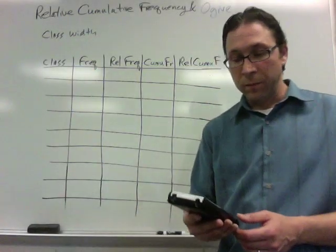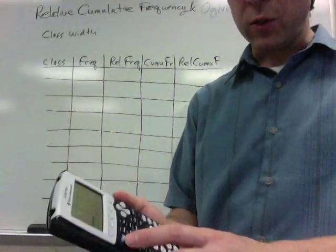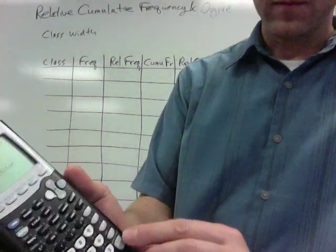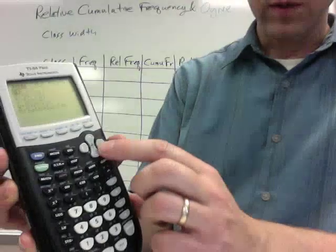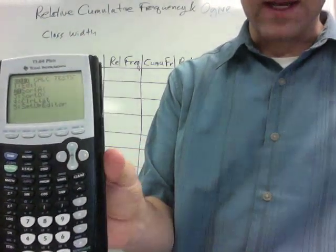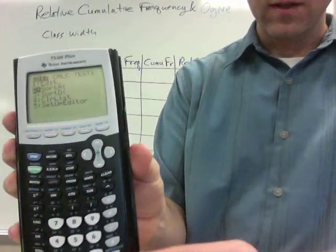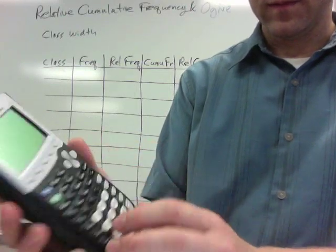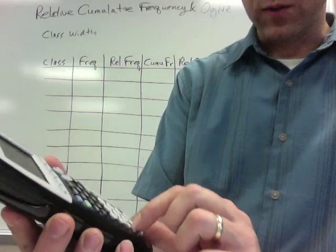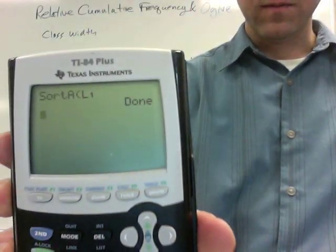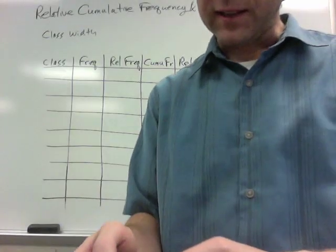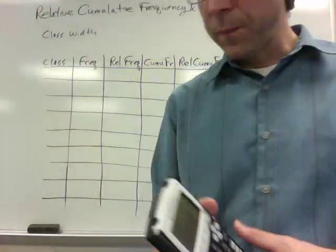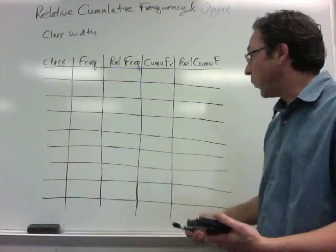Once that's done, a nice thing to do is to sort the list from lowest to highest. I'll go to stat and then slide down to sort A. Tell my calculator what list I want to sort. Go back to the list and you can see that it sorted them from the youngest all the way to the oldest. So that's one thing you want to get first of all is the range.